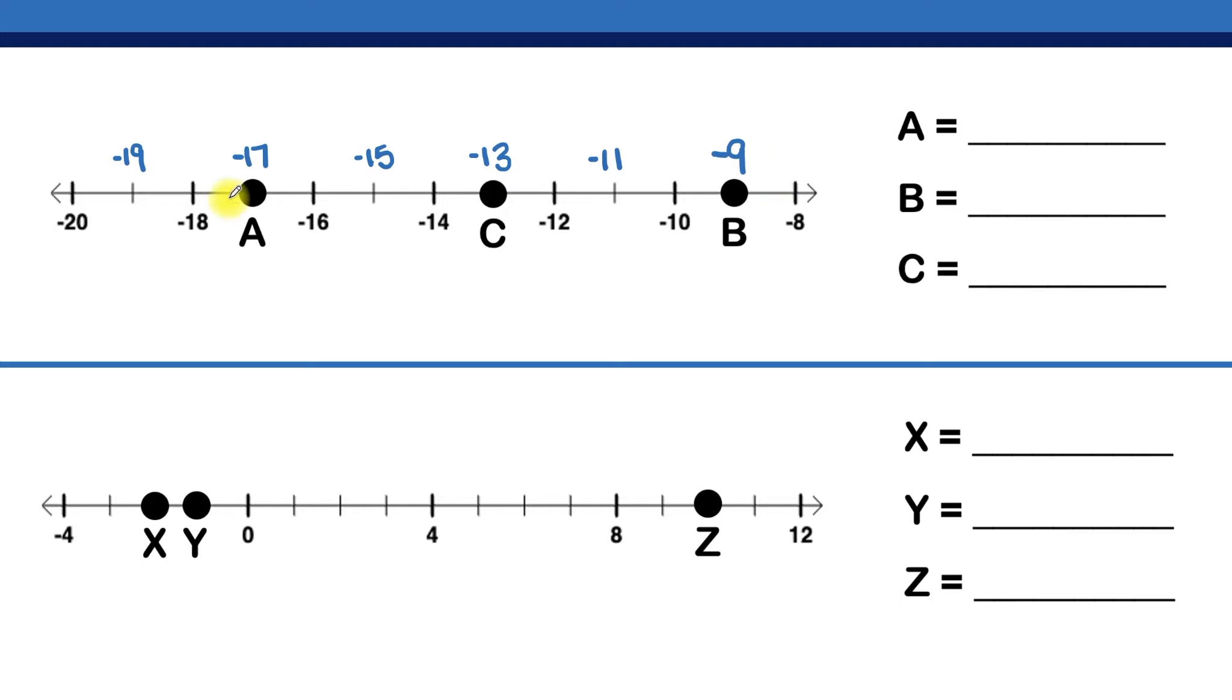So now that we have our missing values filled in, let's answer the question being asked. So what is the value for point A? Well, that's negative 17.